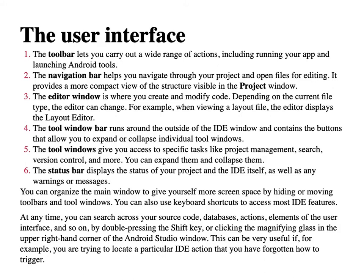You can maximize the main window to give yourself more screen space by hiding or moving toolbars and tool windows. You can also use keyboard shortcuts to access most IDE features. At any time, you can search across your source code, databases, actions, and elements of the user interface by double-pressing the Shift key or clicking the magnifying glass in the upper right corner of the Android Studio window.